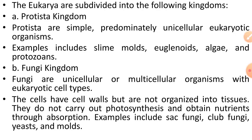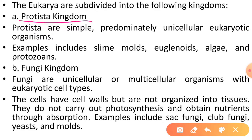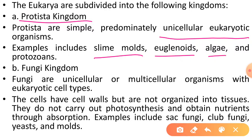The Eukarya are subdivided into the following kingdoms. Pehla kingdom Protista aayega. Protista are simple, predominantly unicellular eukaryotes. Protista jo hoti hain woh unicellular eukaryotic organisms hain. Inke andar hum slime molds, euglenoids, algae, aur protozoans ko include karenge.